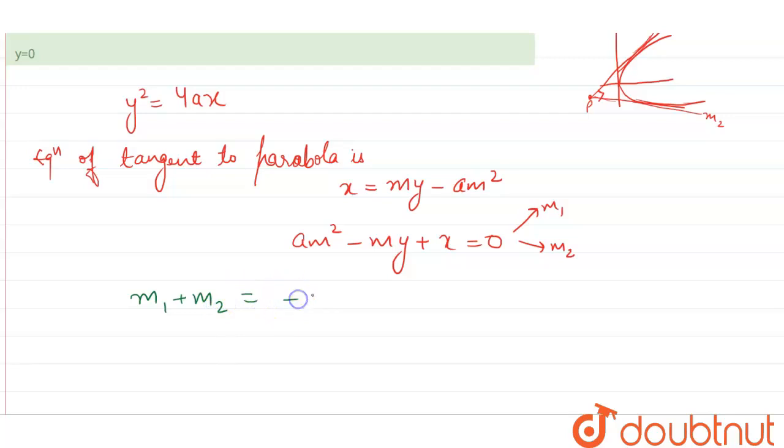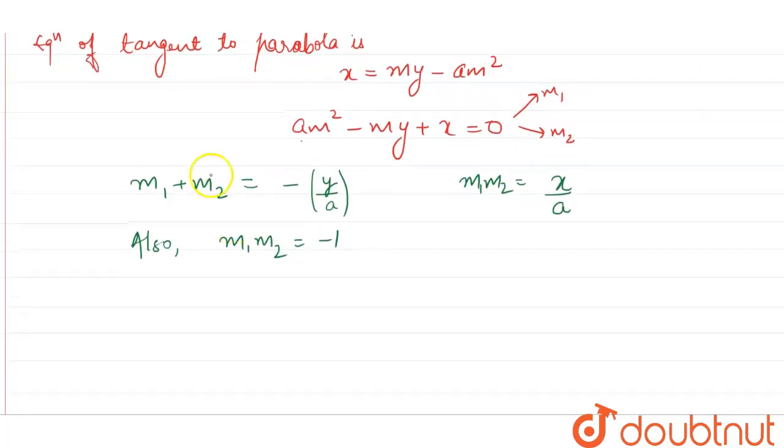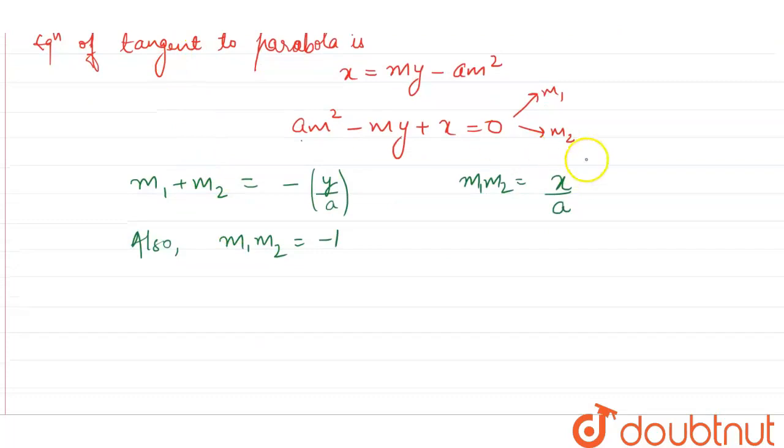and product of roots m1 times m2 equals x over a. Since the tangents are perpendicular, m1 times m2 equals minus 1. From these equations we have